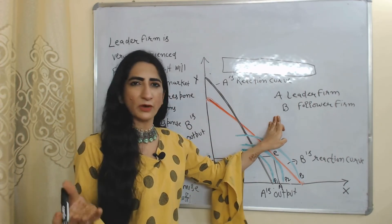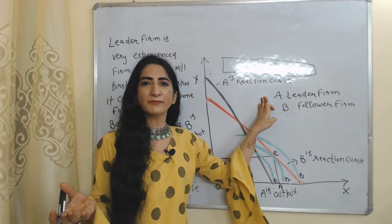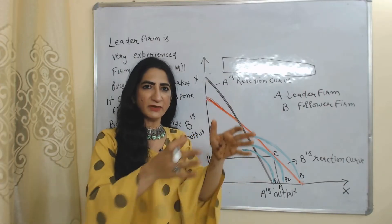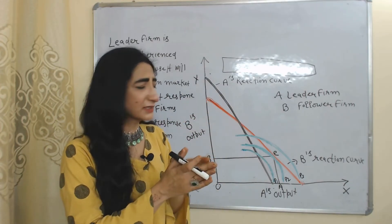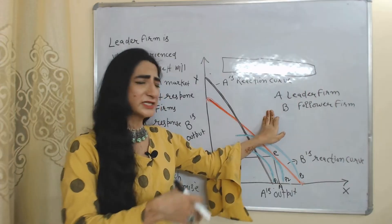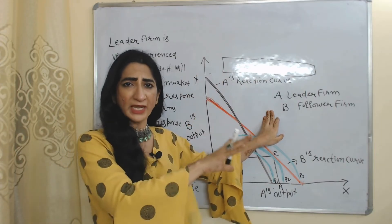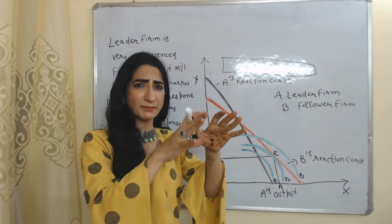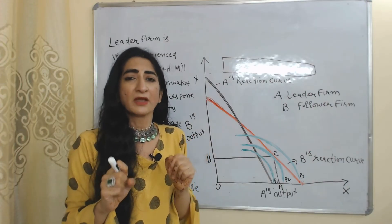First, we assume A is the leader firm and B is the follower firm. If A is the leader, that means A will make the first move in the market, and B will just respond to the strategy of A.